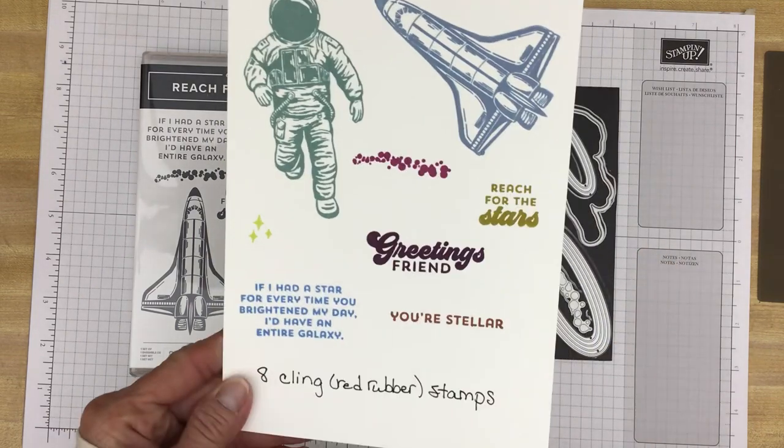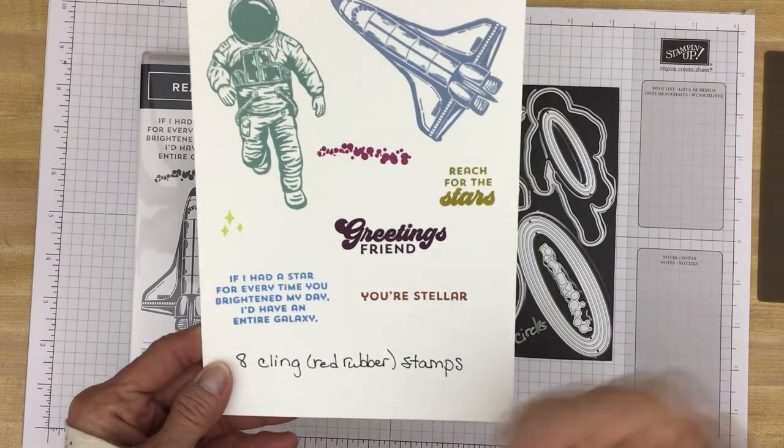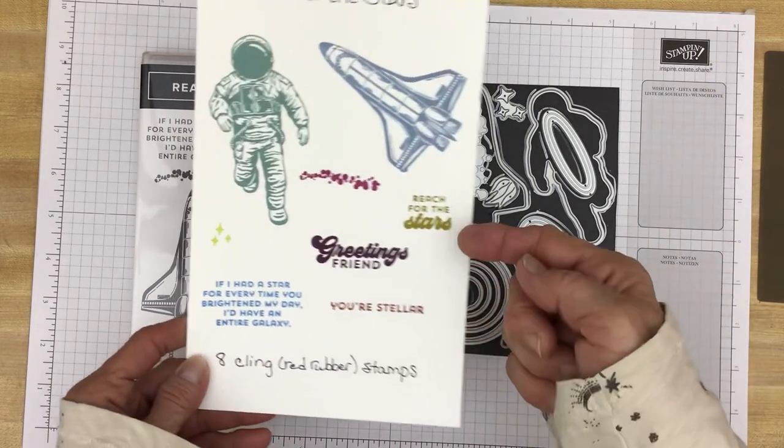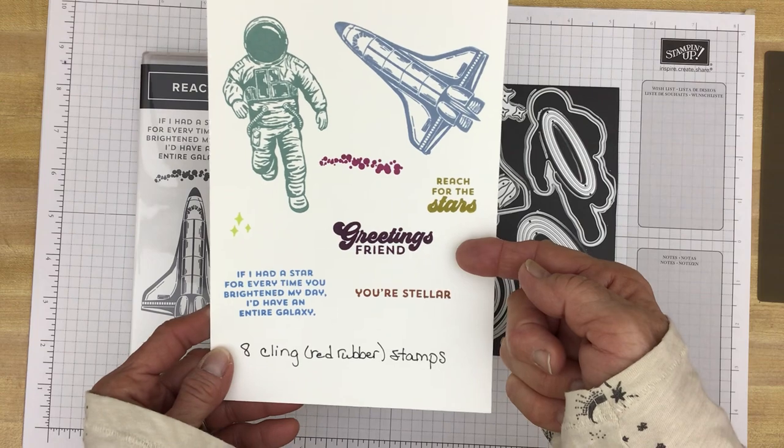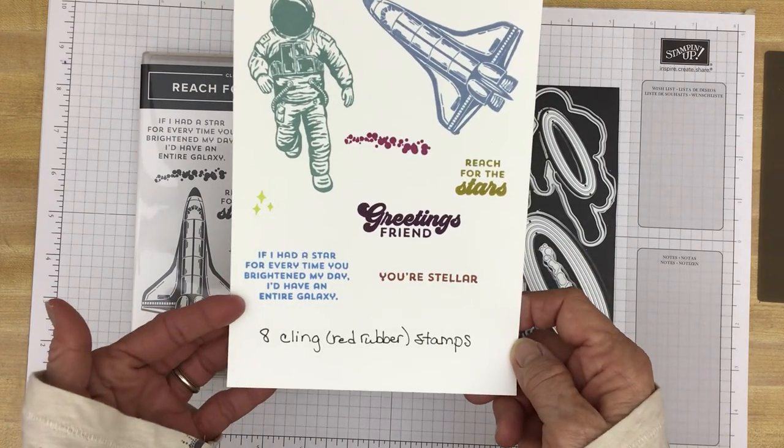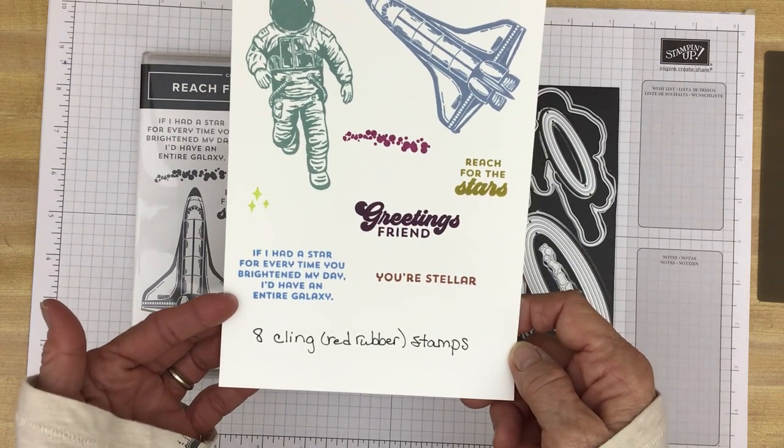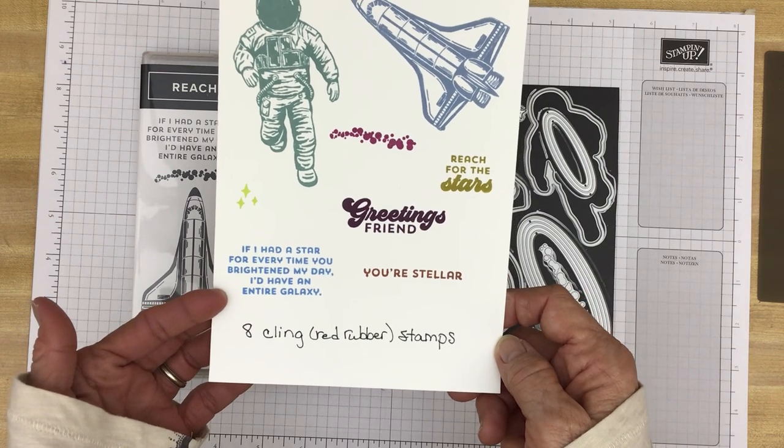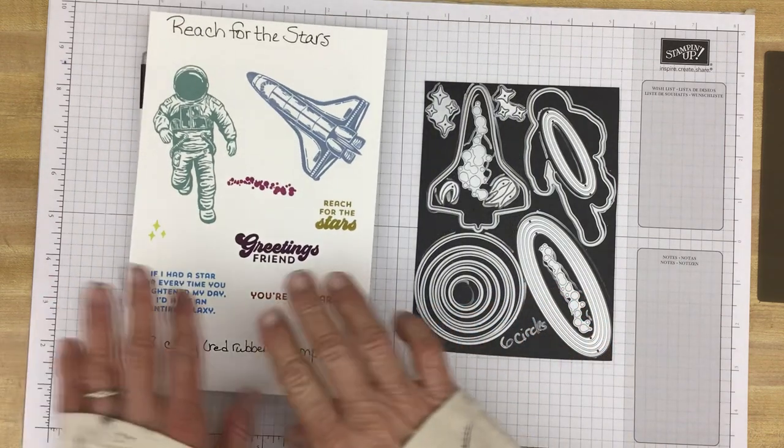And then there are these little stars. And then there are greetings. Reach for the stars. Greetings friend. You're stellar. And if I had a star for every time you brighten my day, I'd have an entire galaxy. So those are the stamps.